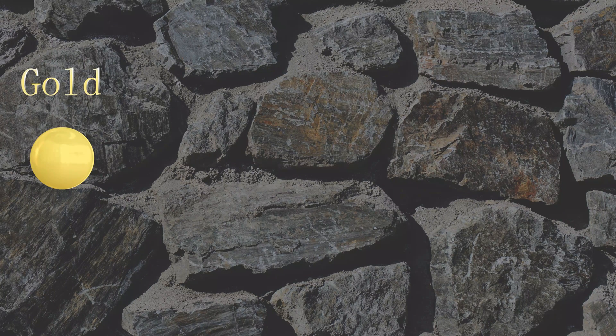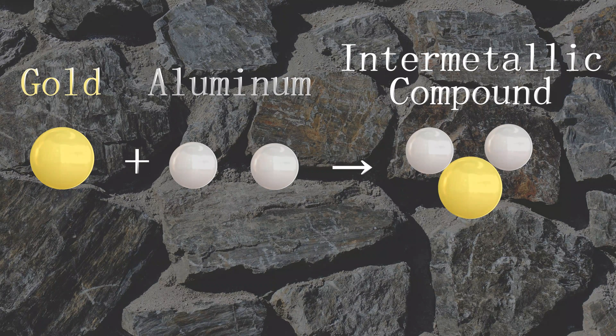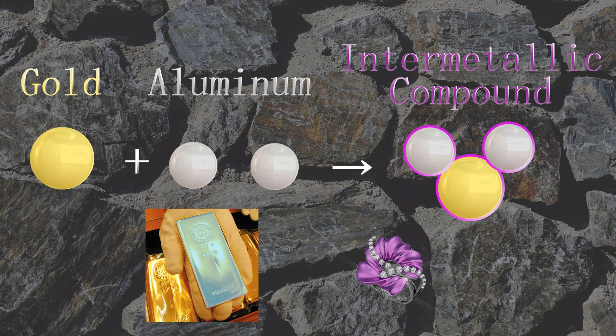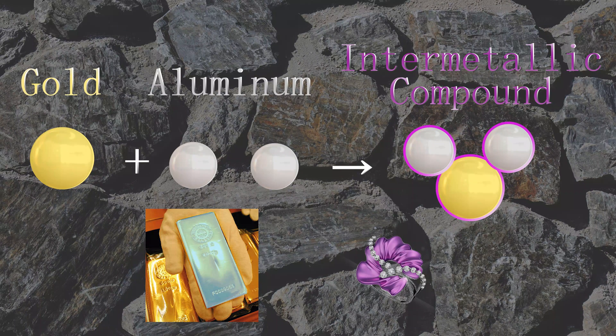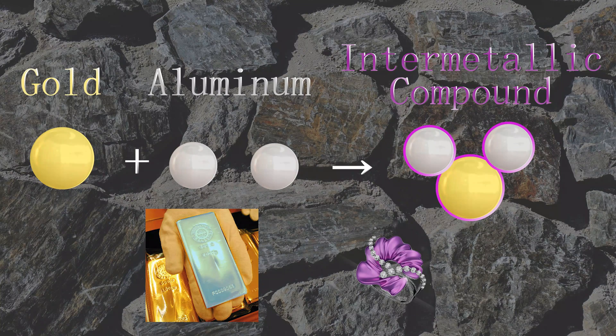Gold can also be reacted with aluminum, gallium, or indium to form compounds that are sometimes referred to as blue gold or purple gold, but these are compounds and not alloys. They are much more brittle than real gold and are very rarely used in jewelry.